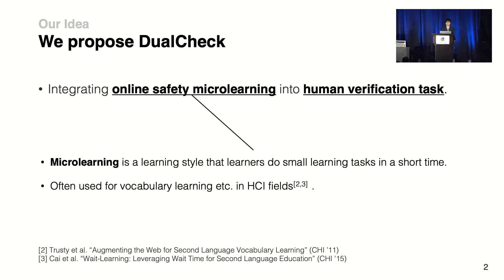So we propose Dual Check, an interactive micro-learning system for online safety. Our idea is integrating online safety micro-learning into human verification tasks like CAPTCHA. Micro-learning is a style where learners split learning tasks into smaller pieces and learn them in their spare time. Our work extends its scope to human online safety micro-learning.